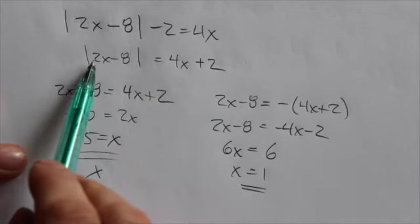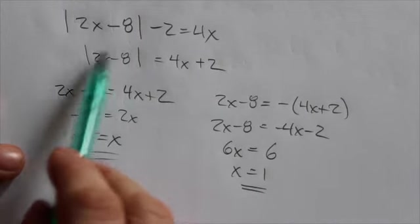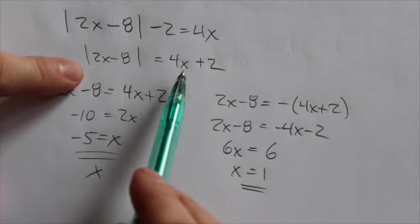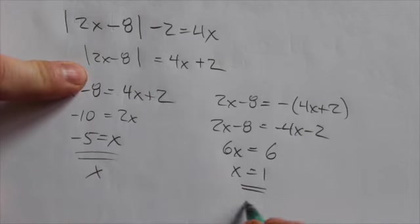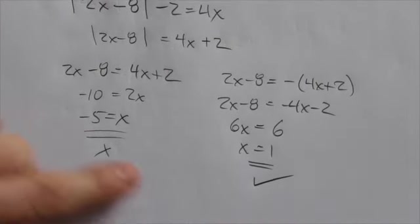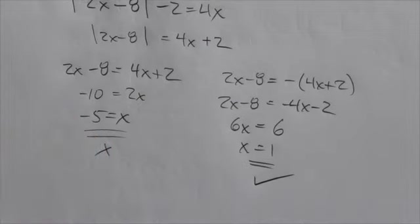Let's plug 1 in. 2 times 1 is 2, minus 8 is negative 6, but the absolute values make it positive. 4 times 1 is 4, plus 2 is positive 6. So both sides become positive 6. The answer to this question is just x equals 1, and we've got an extraneous root at negative 5.